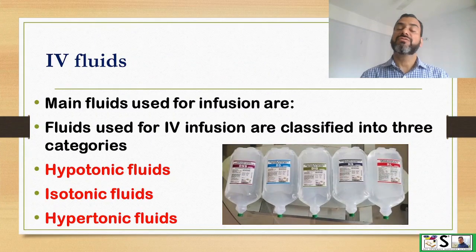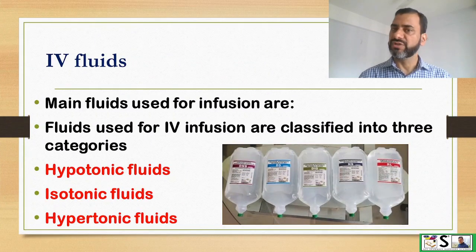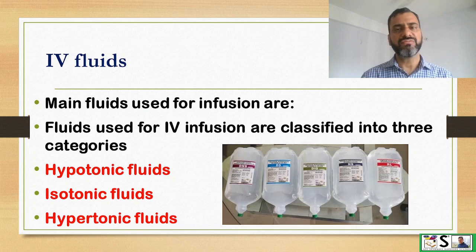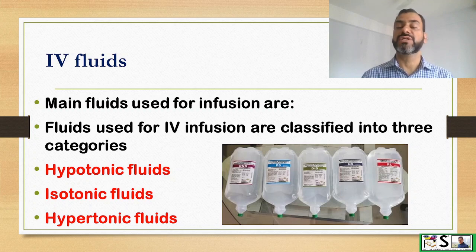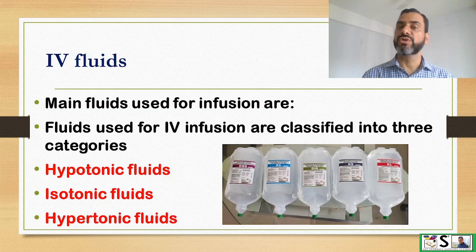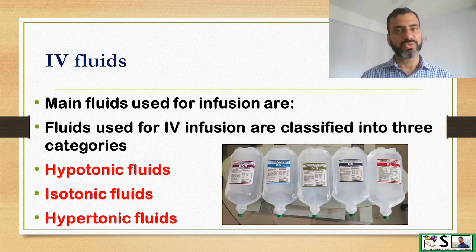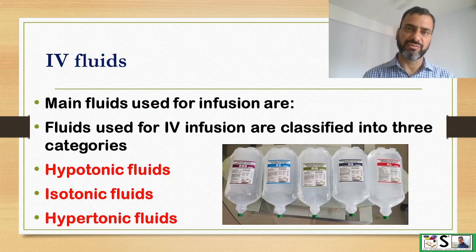What are the fluids which we use for IV infusion? The main fluids which we use are classified into three categories: hypotonic fluids, isotonic fluids, and hypertonic fluids.